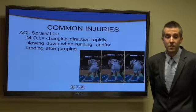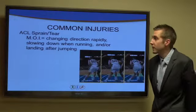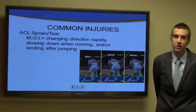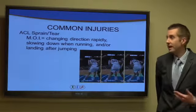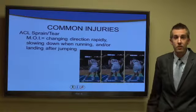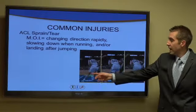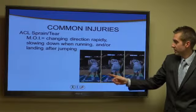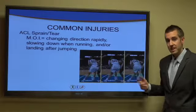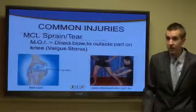Common injuries: you have your ACL sprain or tear. This is usually caused when changing direction rapidly, slowing down, and/or landing after jumping. As you can see in this picture, the athlete comes down and lands, and if you follow this knee, it just completely buckles — that's the ACL giving out.